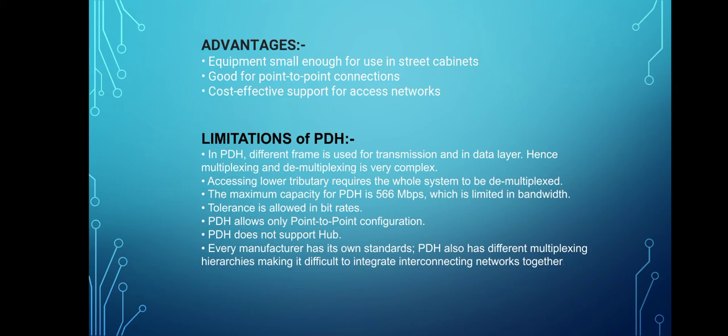Now, the limitations of PDH. First, in PDH, different frames are used for transmission and in the data layer, hence multiplexing and demultiplexing is very complex. Second, accessing a lower tributary requires the whole system to be demultiplexed. Third, the maximum capacity of PDH is 566 Mbps, which is limited in bandwidth. Fourth, tolerance is allowed in bit rates. Fifth, PDH allows only point-to-point configuration.